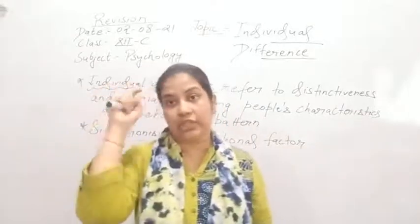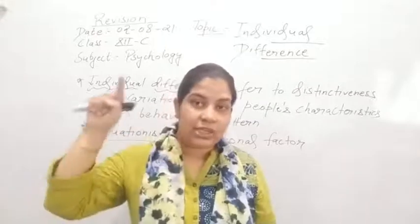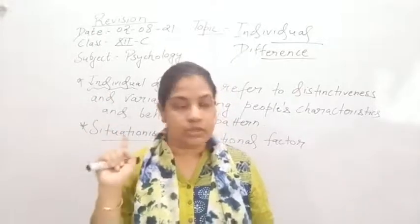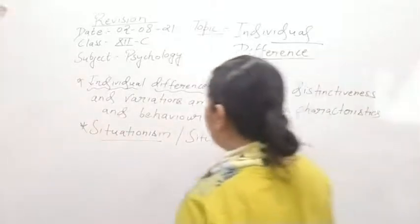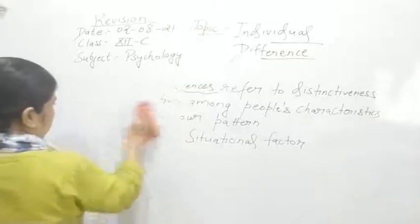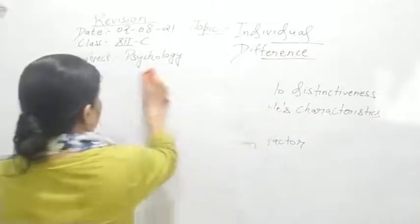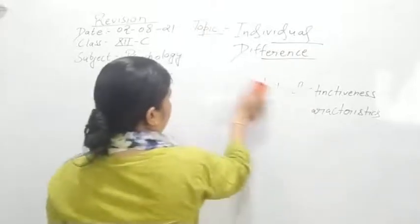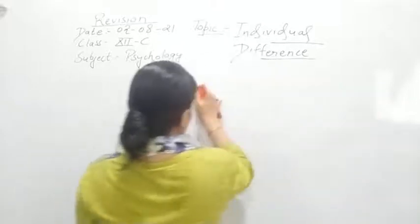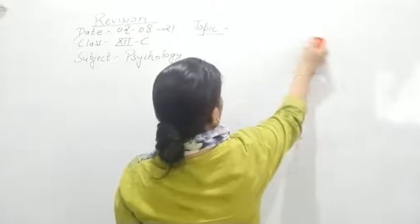Next we have to discuss this chapter which is all about variations in psychological attributes. So what is an attribute? Attribute refers to characteristics and features — that is an attribute.